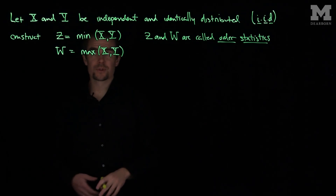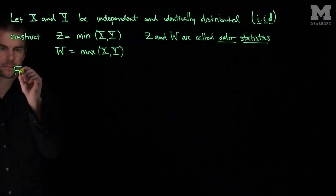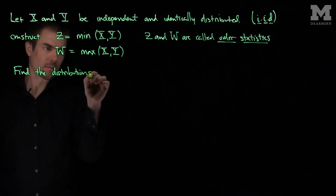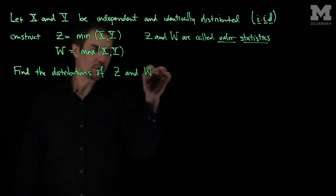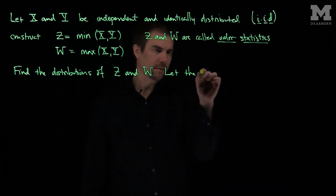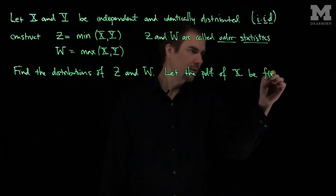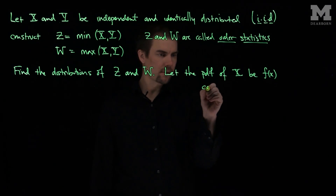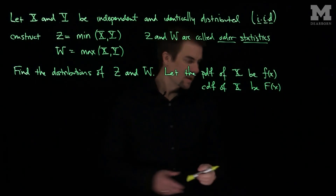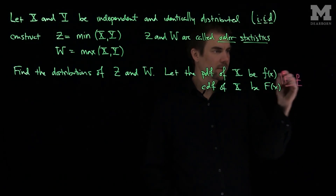We can do this with a larger collection of random variables as well. And we're interested in finding the distributions of z and w. So let's find the distributions of z and w. We'll let the pdf of x be f of x and the cdf of x be capital F of x. We know the relationship is that if I differentiate the cdf, I will get the pdf.